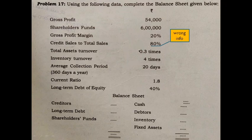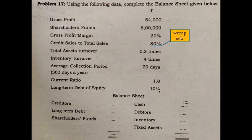The remaining given data: total asset turnover ratio is 0.3 times; inventory turnover ratio is 4 times; average collection period is 20 days (using 360 days as the time base); current ratio is 1.8; and long-term debt to equity is 40%.